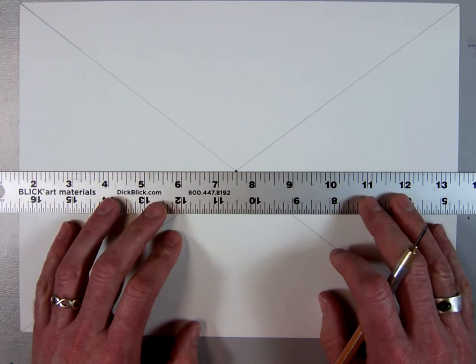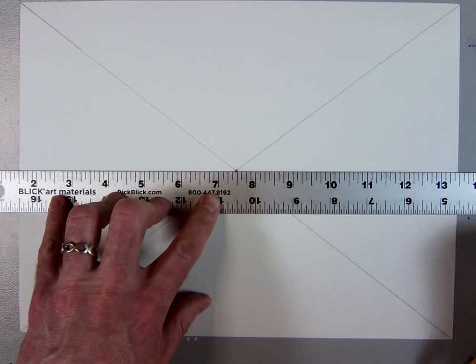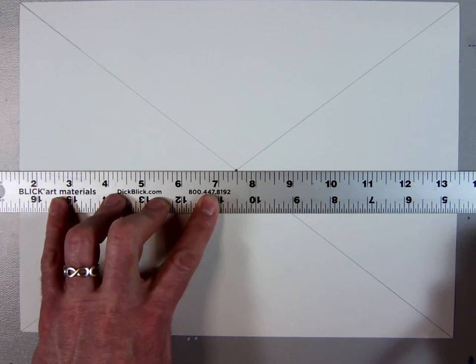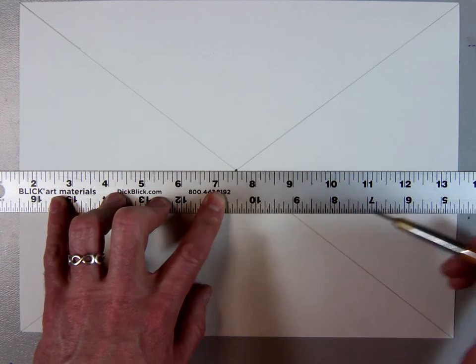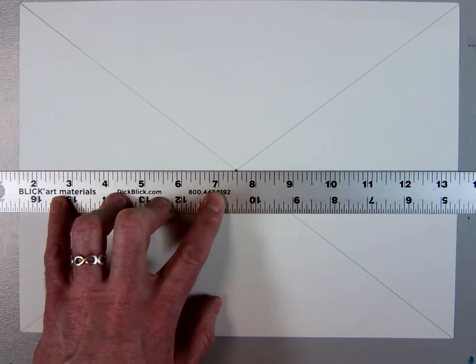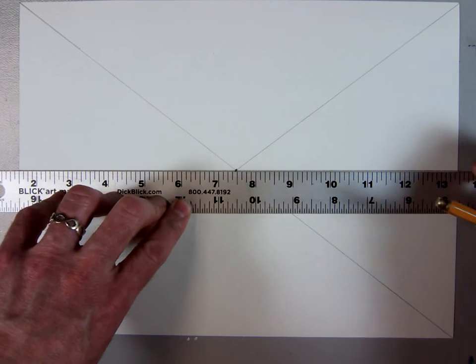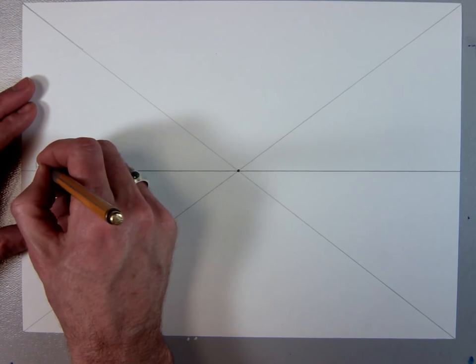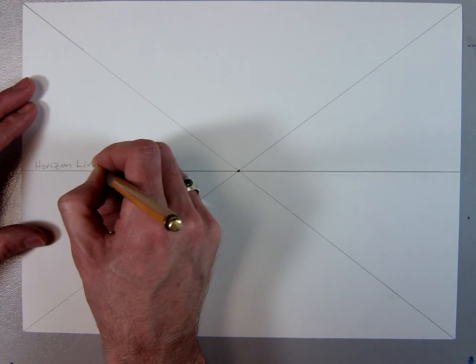Next, take your straight edge. Make sure that it's parallel. Being parallel and straight to the edges is really going to make this assignment look nice. Make sure your straight edge is parallel to the bottom and top of your paper and draw a nice line there. On that line, write horizon line, so that I know you know what the horizon line is.